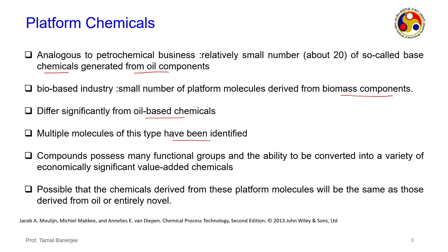Multiple such molecules have been identified. All these compounds possess functional groups and the ability to be converted into a variety of economically significant value-added chemicals. It is possible that the chemicals derived from these platform molecules will be the same as those from oil refinery — for example, ethanol from biomass is called bioethanol, whereas ethanol from petroleum is simply called ethanol, but they are the same in composition.